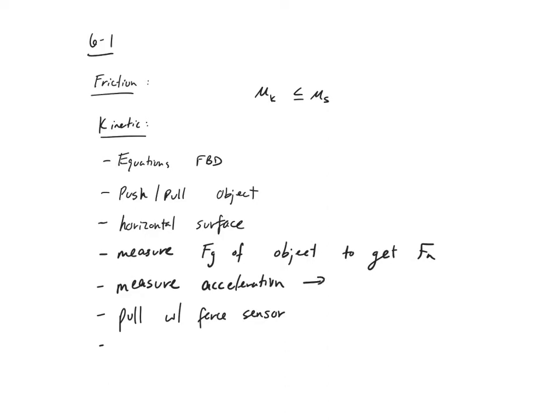We can measure the acceleration, but ideally it would be nice to have this moving at constant velocity — acceleration equal to zero. Why make things simpler? Because then we have a balance of forces. If the acceleration is zero and it's moving at constant velocity, then the applied force equals the force of friction going the other way. We could still do it even if it weren't constant velocity.